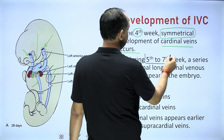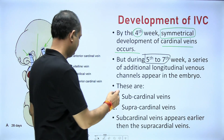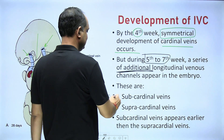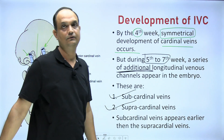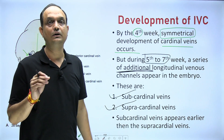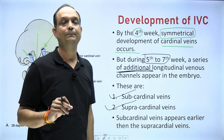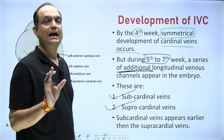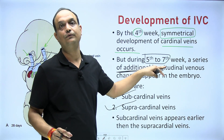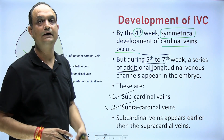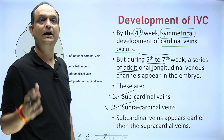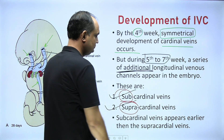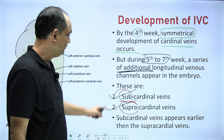By the fifth or seventh week of development, there is formation of some additional longitudinal venous channels. These are known as sub cardinal and supra cardinal veins. When writing a short note on the development of inferior vena cava, first mention the cardinal veins, then write that by the fifth or seventh week two additional venous channels appear — sub cardinal and supra cardinal veins.